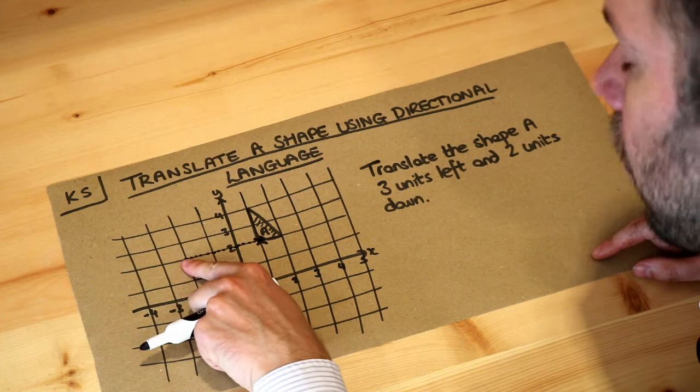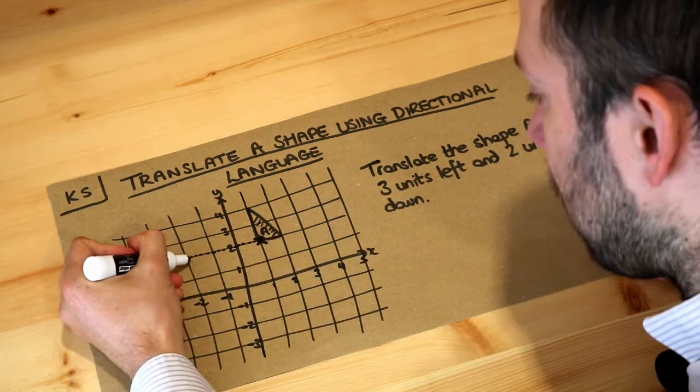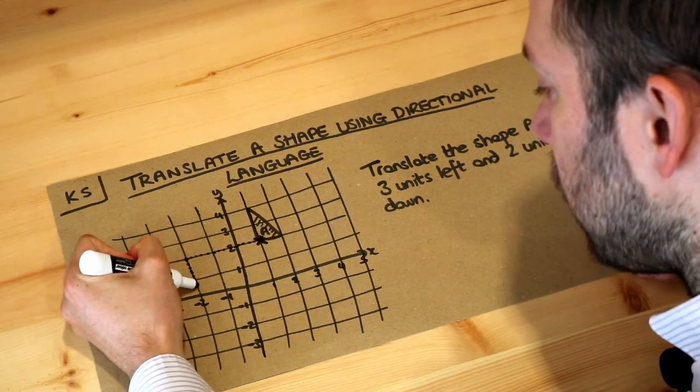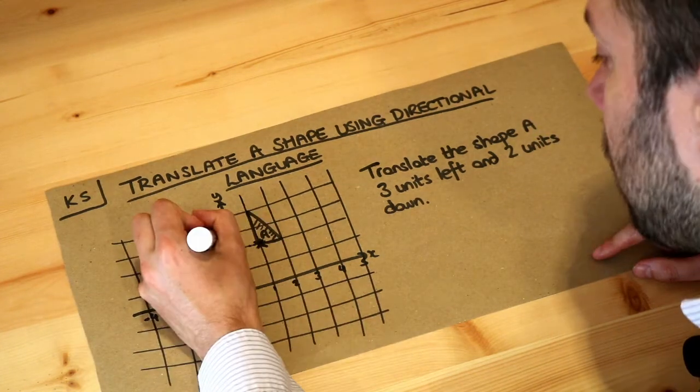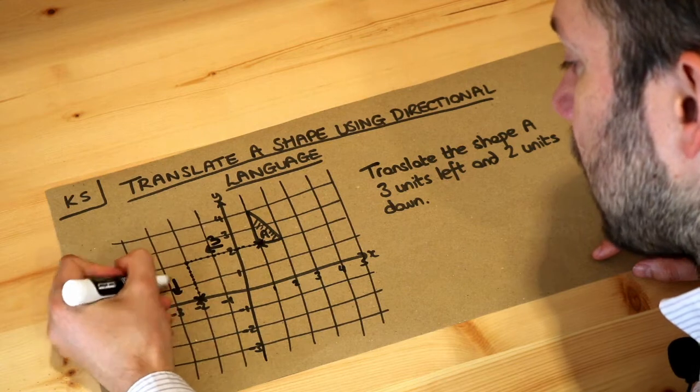And then we go two units—two squares—down: one, two. So this point has now ended up here. It's gone left three and down two.